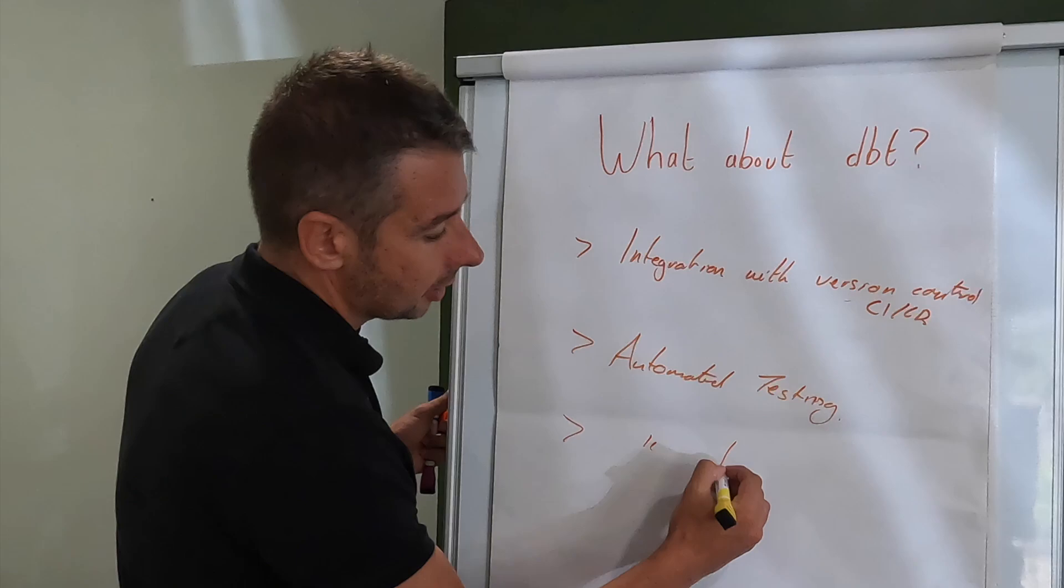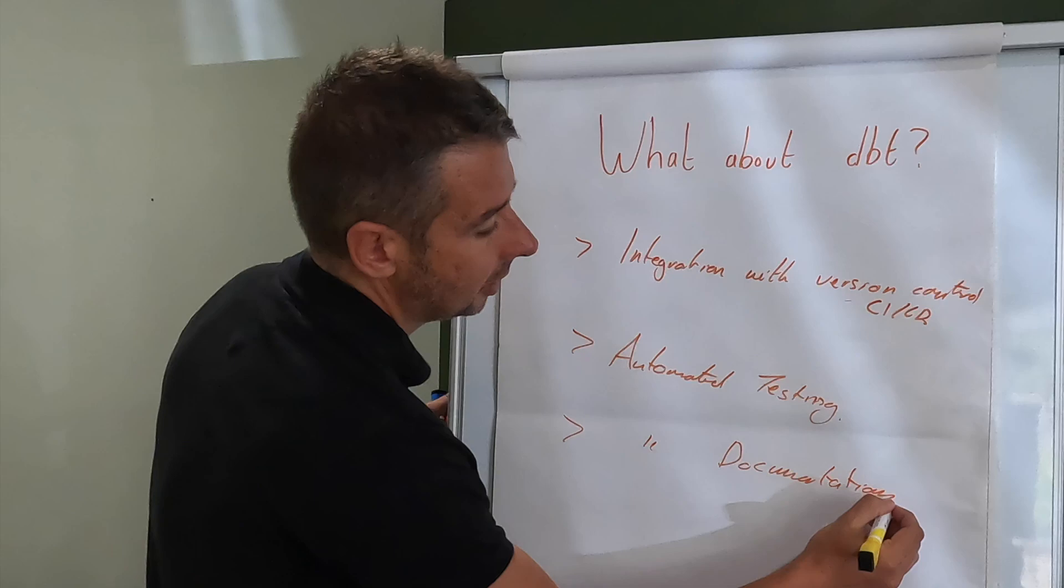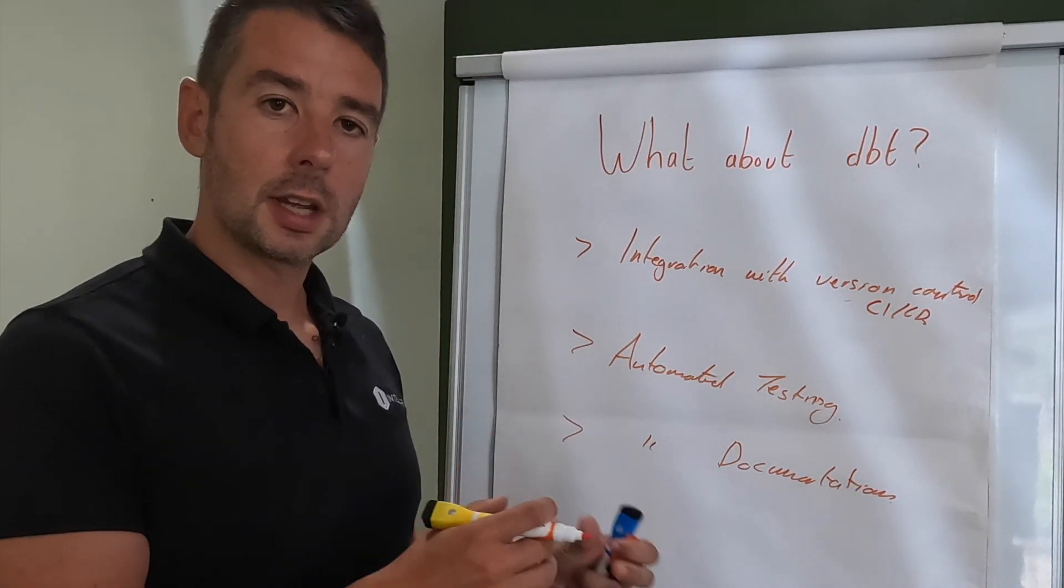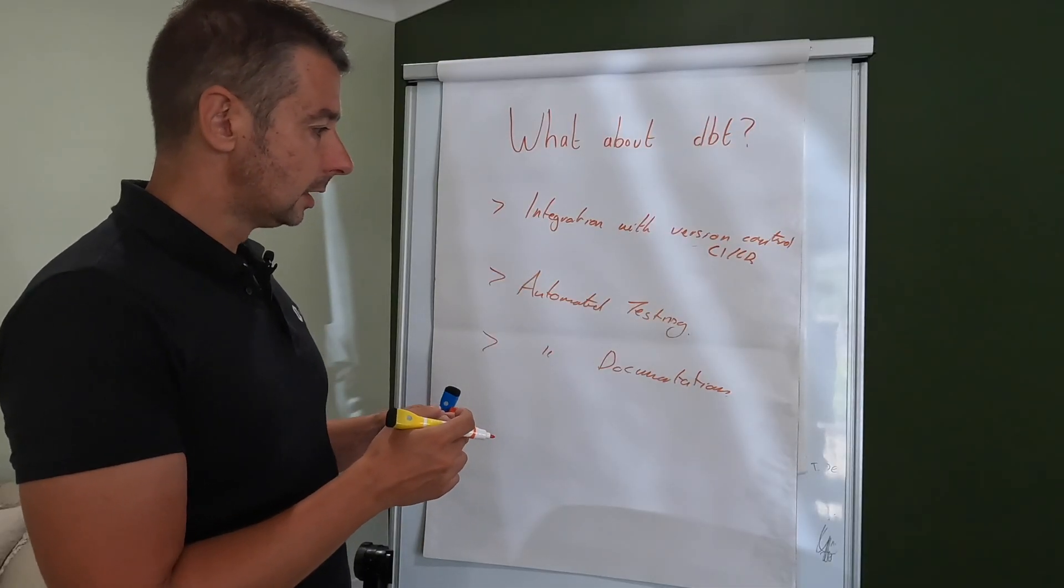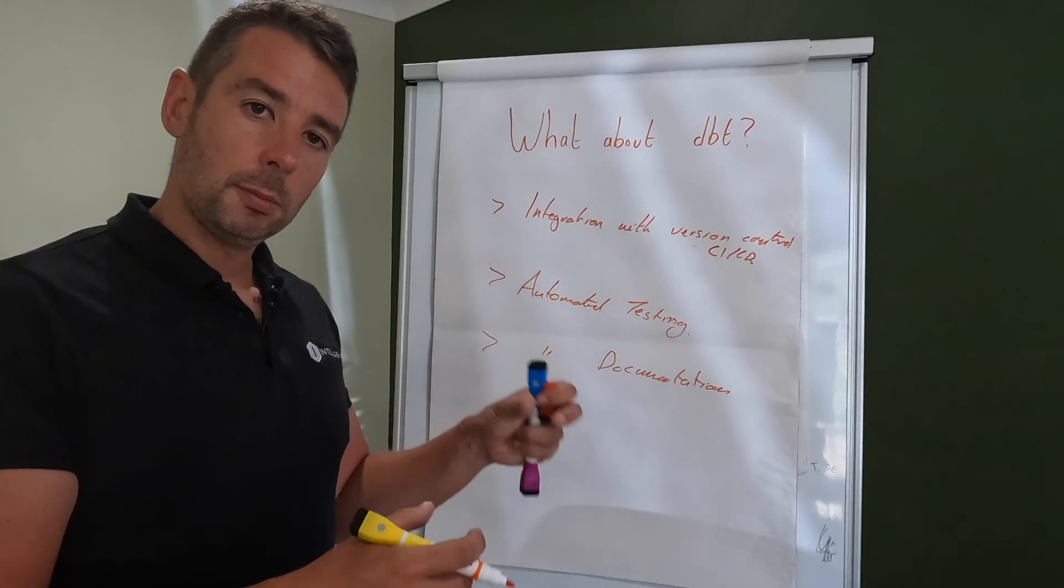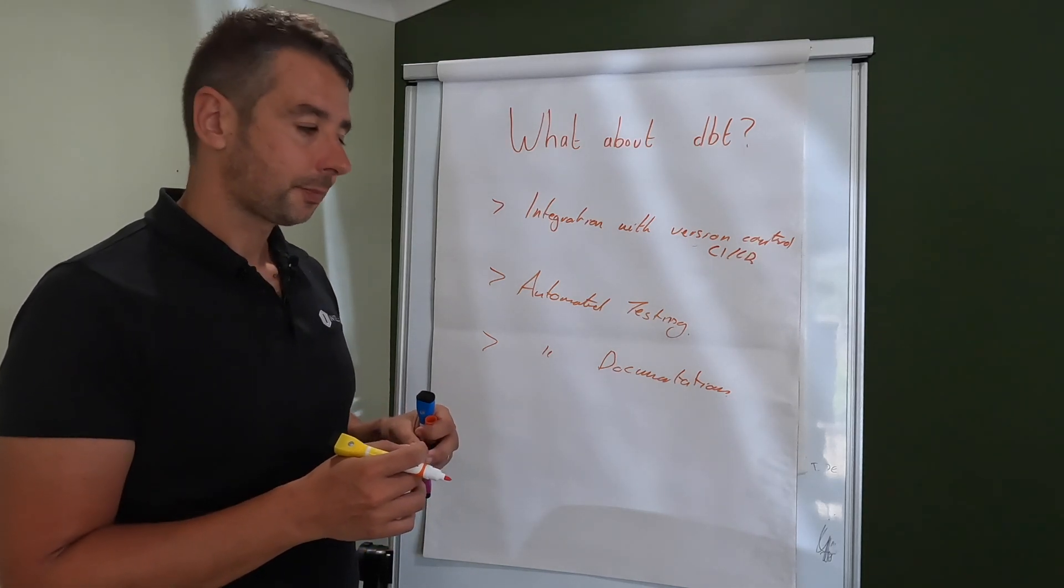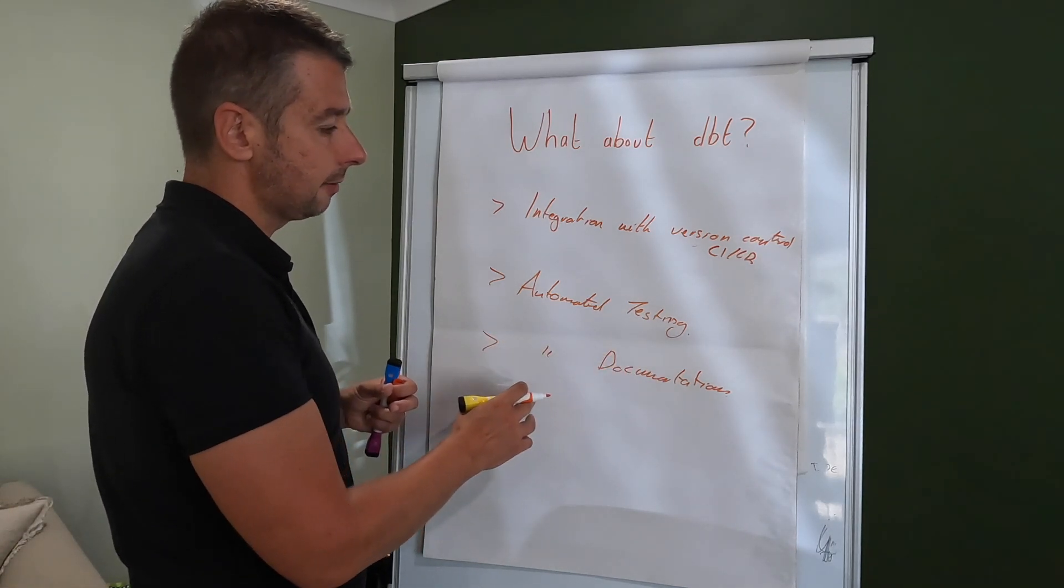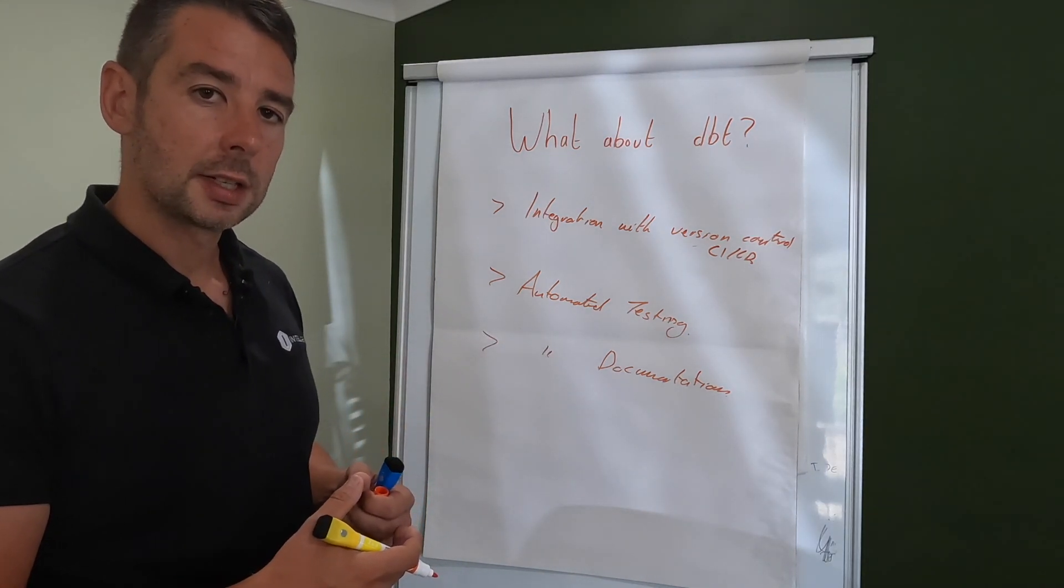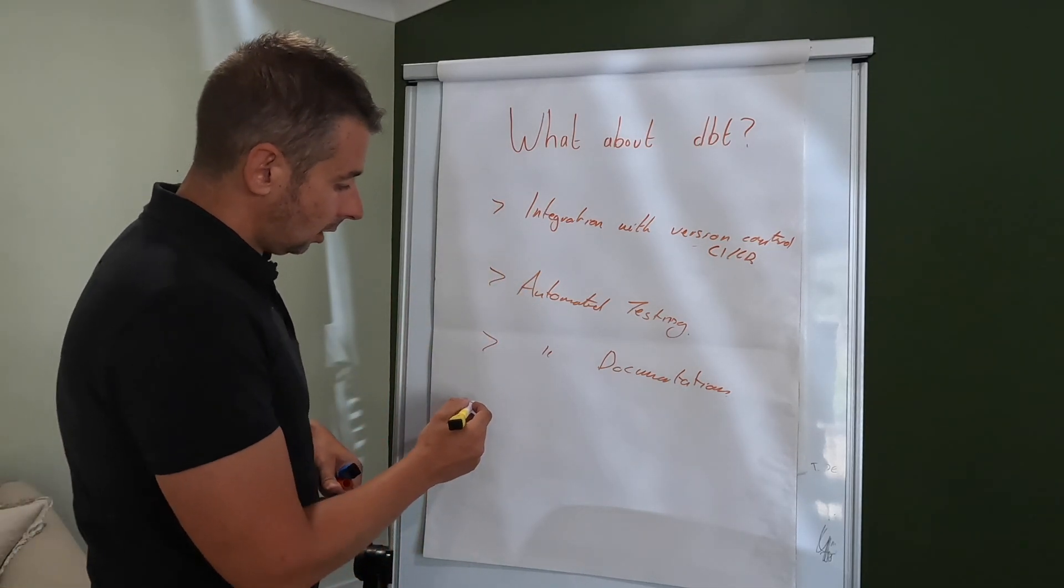And there's also automated documentation. So because DBT knows how your models are set up, where the data is coming from and how it's transformed and what jobs linked to what other jobs, what models are dependent on others, and this goes back to the orchestration dependency point which I'm going to cover in the next point. It makes it really easy then for DBT to produce documentation based upon what it knows about and what you've put into that DBT project, something that Snowflake doesn't necessarily cater for at the moment.